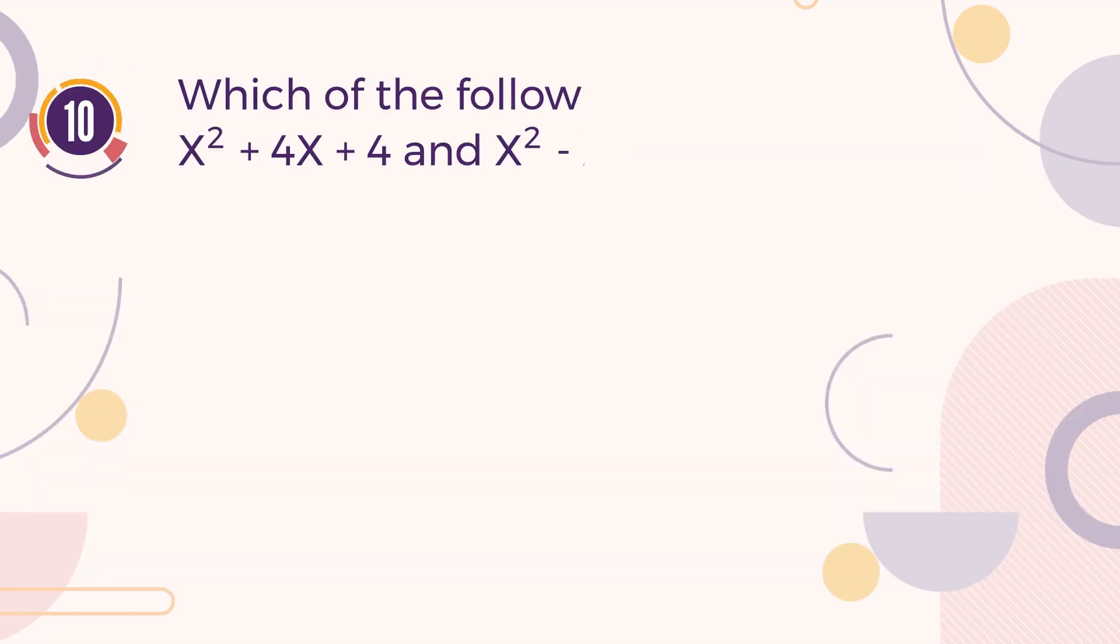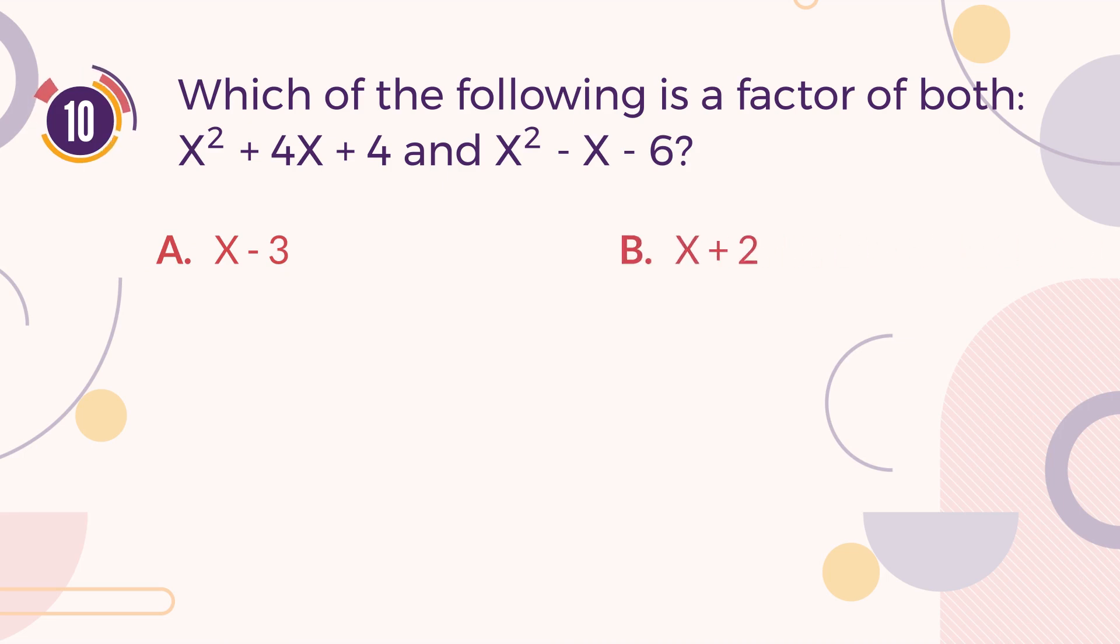Number 10. Which of the following is a factor of both X squared plus 4 times X plus 4, and X squared minus X minus 6? A. X minus 3. B. X plus 2. C. X minus 2. D. X plus 3.